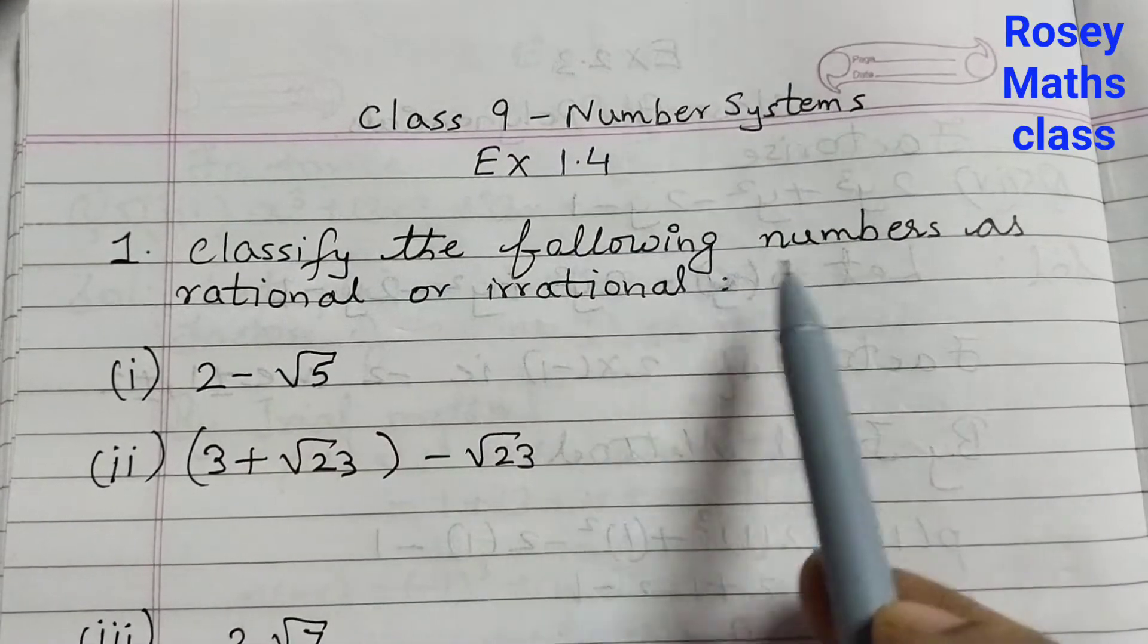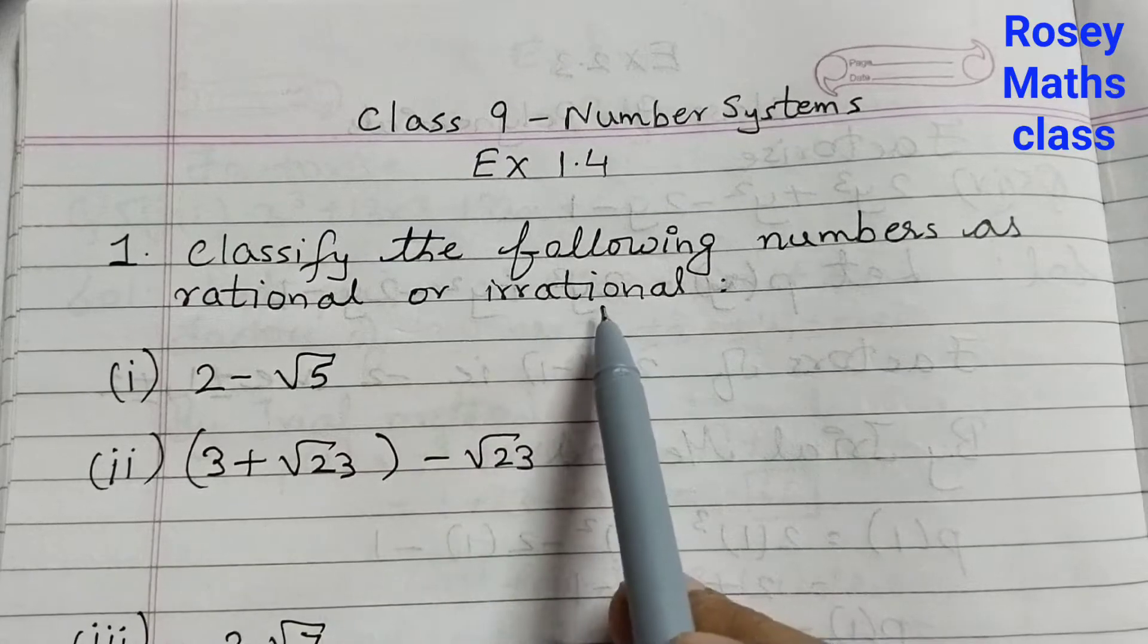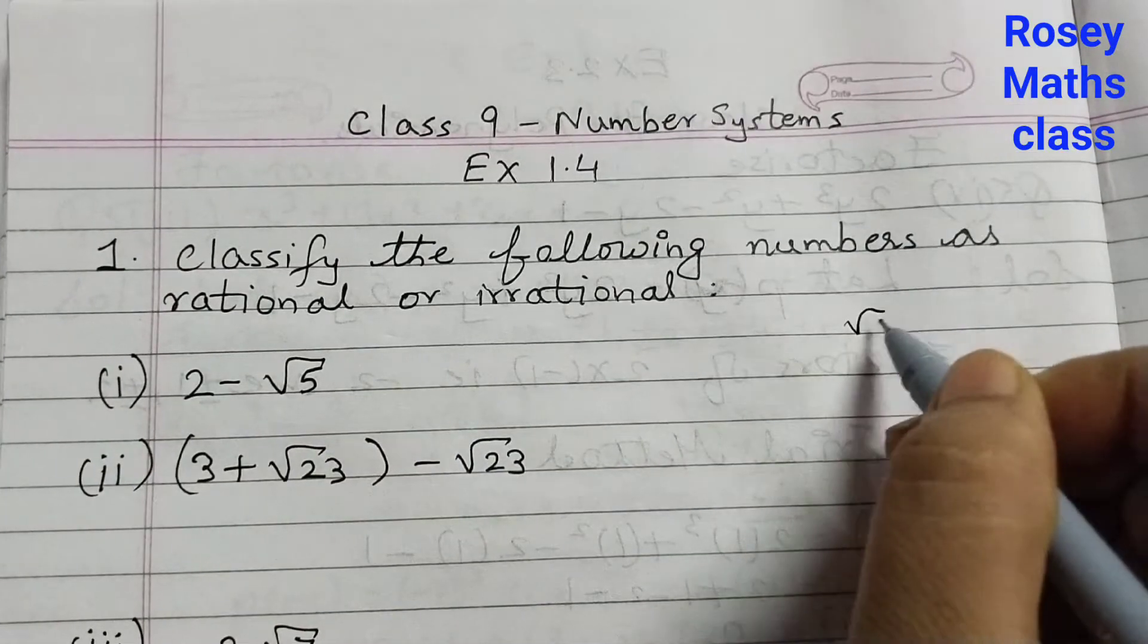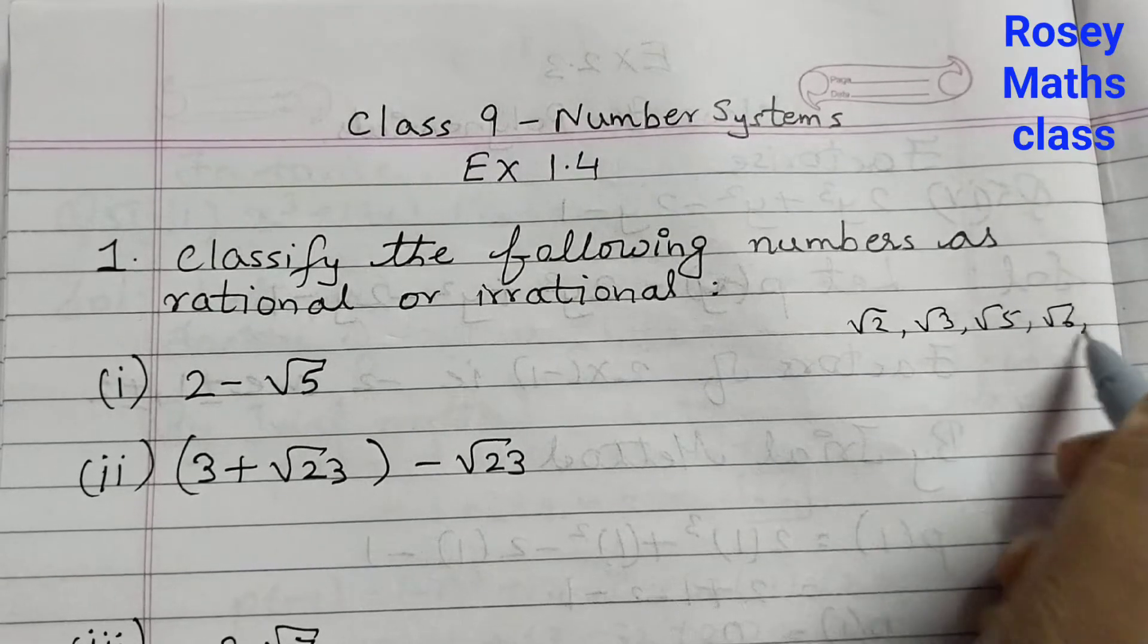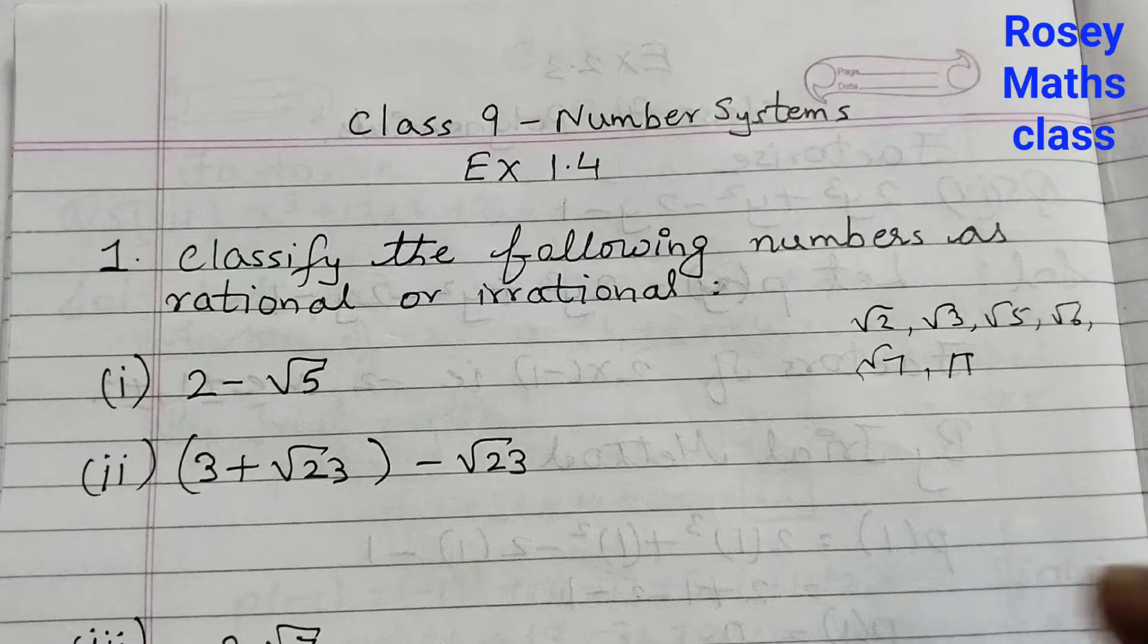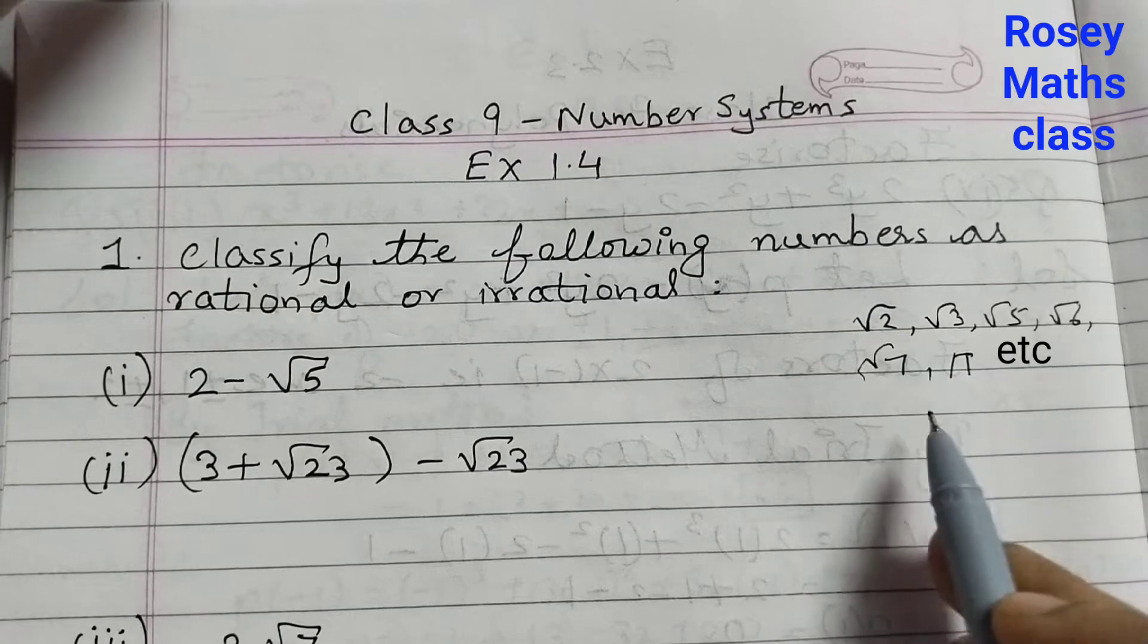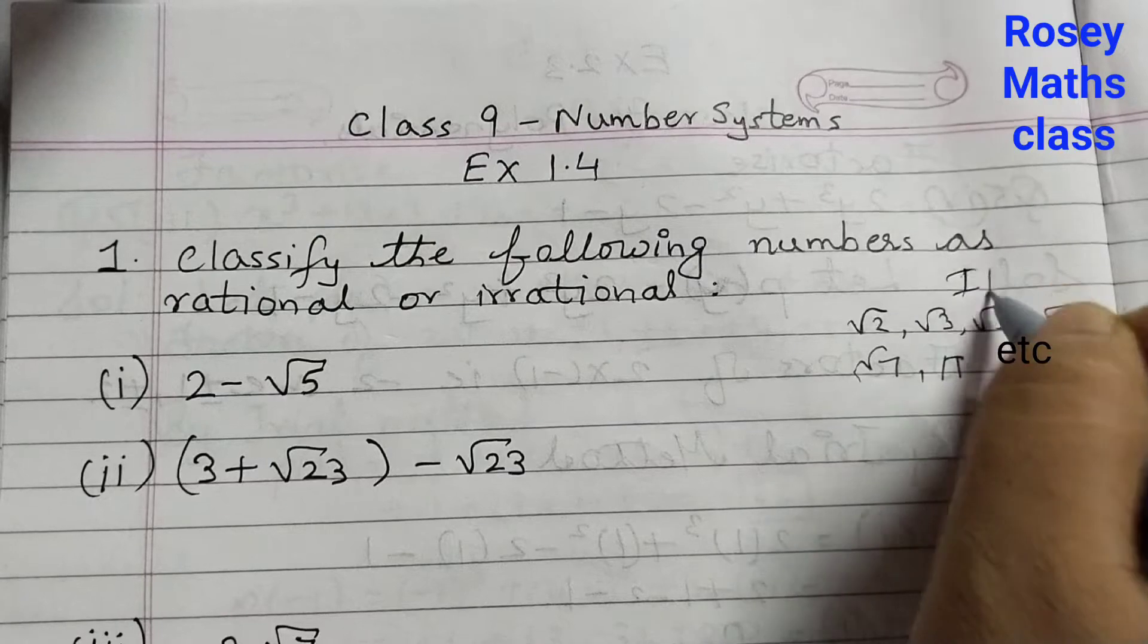Classify the following numbers as rational or irrational. Rational numbers are numbers that can be written in p by q form and irrational numbers are numbers like square root of 2, square root of 3, square root of 5, square root of 6, square root of 7, pi. These are all irrational numbers because these are non-terminating, non-recurrent decimal numbers. We cannot write in p by q form.